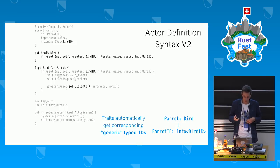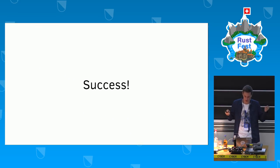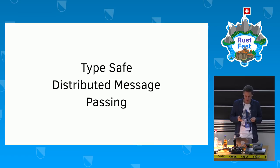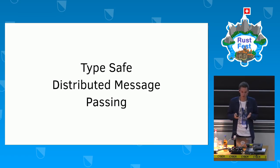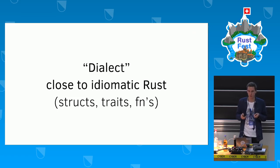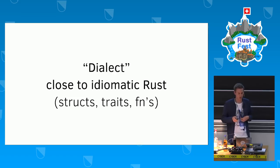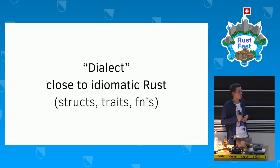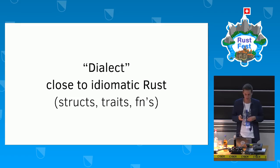So now we have type-safe distributed message passing in what I would call a dialect of Rust that's still very close to idiomatic Rust. I don't have to create any structures for messages — I just write structs for my actors, I can use traits, and I have functions to handle messages.